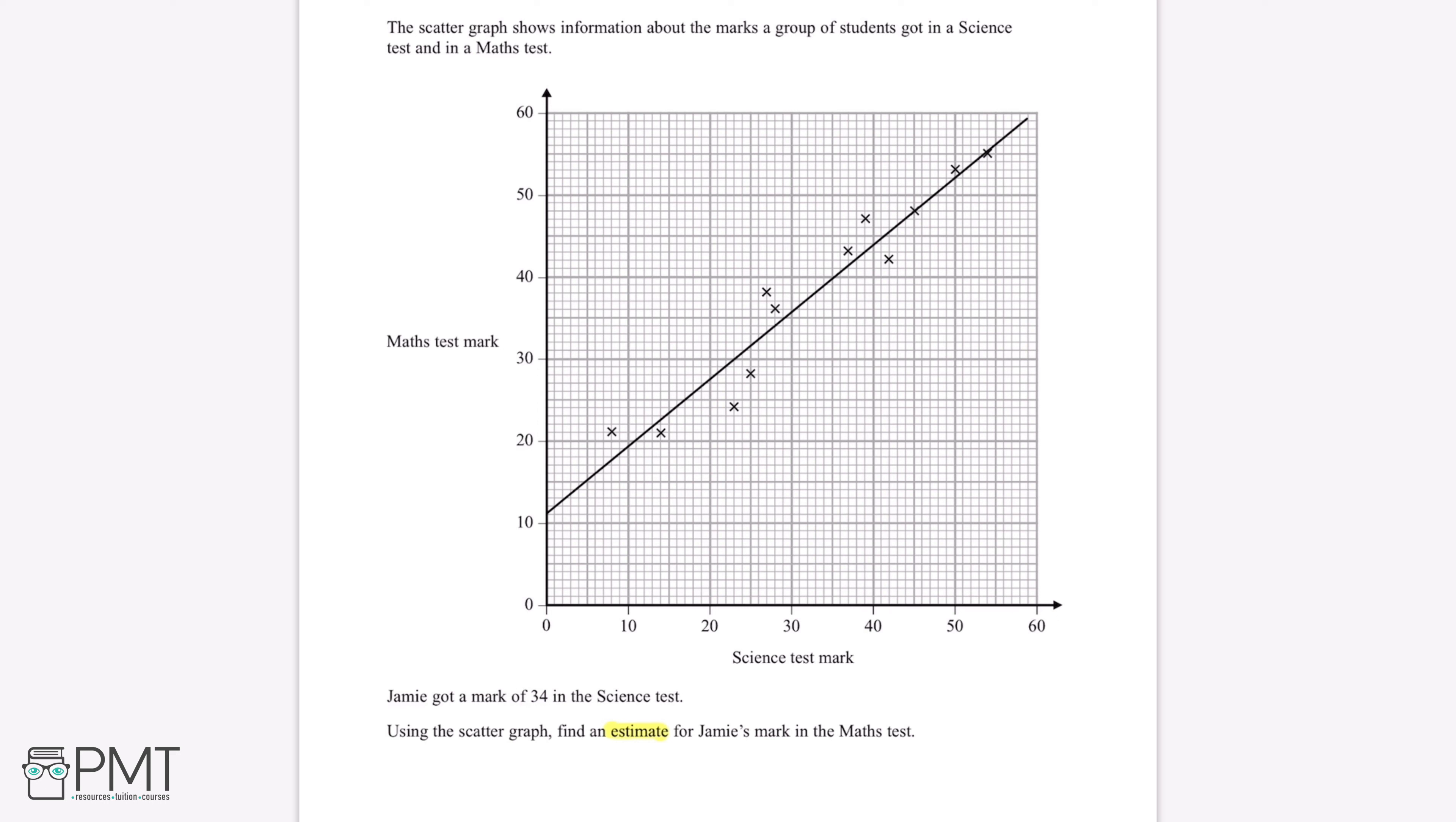Now we've been told that Jamie got a mark of 34 in the science test. So in order to estimate his score for the maths test, we're going to want to look at the science test mark of 34 and use the line of best fit to estimate the maths test mark.